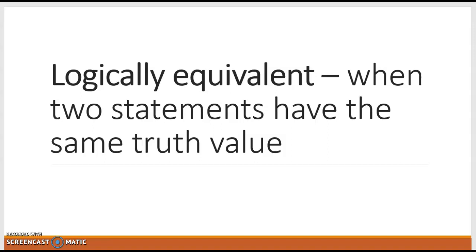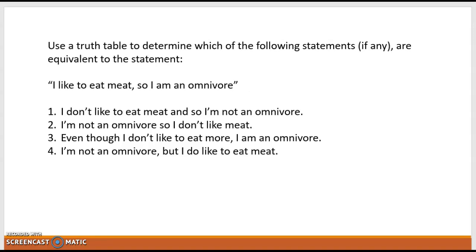So what are we going to do with this? Let's use a truth table to determine which of the following statements, if any, are equivalent to the statement: 'I like to eat meat, so I am an omnivore.' We're going to look at four statements: 'I don't like to eat meat, so I'm not an omnivore.' 'I'm not an omnivore, so I don't eat meat.' 'Even though I don't like to eat meat, I am an omnivore.' Or 'I'm not an omnivore, but I do like to eat meat.' Do any of these have logical equivalence to 'I like to eat meat, so I am an omnivore'?